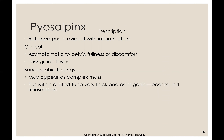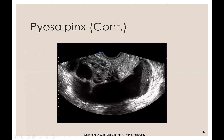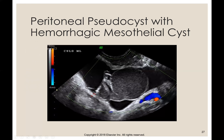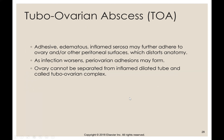Pyosalpinx is retained pus in the oviduct with inflammation. Clinically, it presents from asymptomatic to pelvic fullness or discomfort with a low-grade fever, and it may appear as a complex mass. The pus is within the dilated tube, making it echogenic — so it's fluid-filled but with echoes from the pus. Sometimes you'll see complex fluid all the way through the whole entire tube. Notice how thin the fallopian tube wall is on these images.